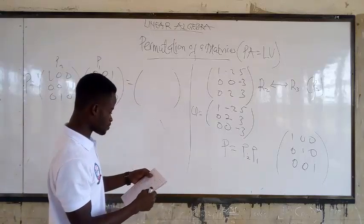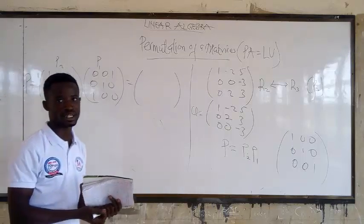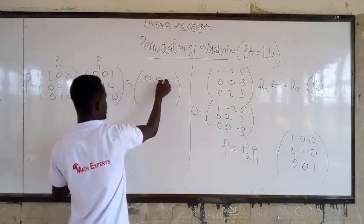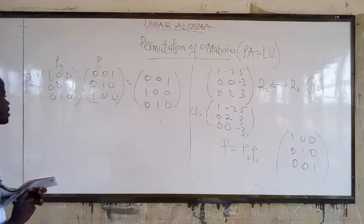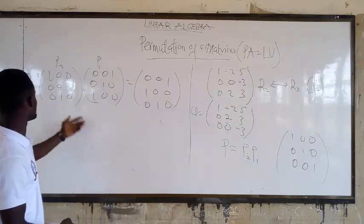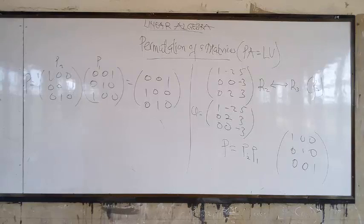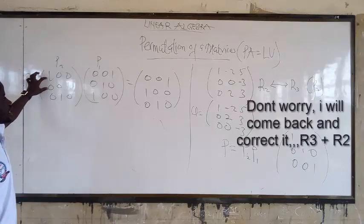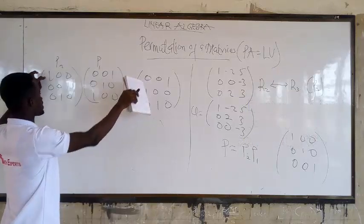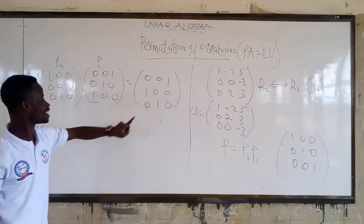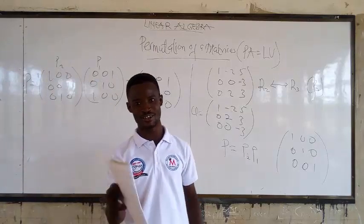When you multiply P2 by P1, you get the permutation matrix P: [[0,0,1],[1,0,0],[0,1,0]]. You can punch this into your calculator to verify. You can see a pattern there.